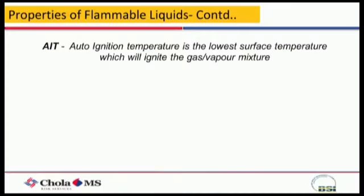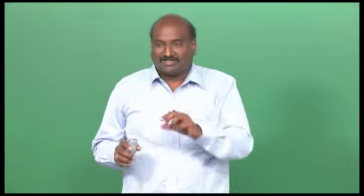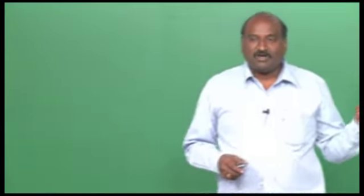Another terminology is AIT — auto ignition temperature. Auto ignition temperature is the temperature at which a material can burn by itself. At certain temperatures, certain materials catch fire instantaneously — they burn themselves. These words — auto ignition, LEL, UEL, flash point — all come everywhere across hazardous area classification studies. These are some basics you need to be clear about before moving further.